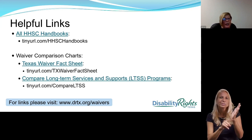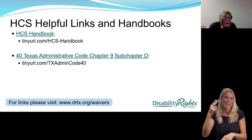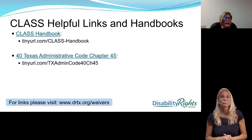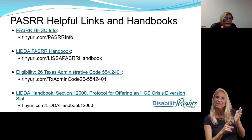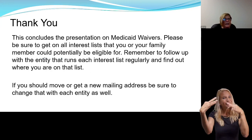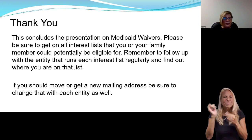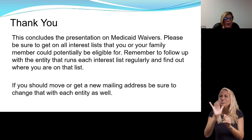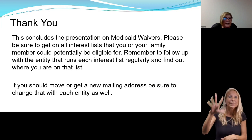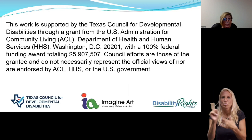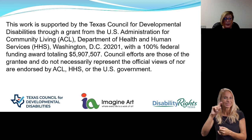Below are some helpful links from handbooks of HHSC to waiver comparison sheets, income and asset limits, the HCS handbook, and the Texas Administrative Code. There are handbooks and links on every one of the seven waivers, including the limited nursing facility stay. This concludes the presentation on Medicaid waivers. Please be sure to get on all interest lists that you or your family member could potentially be eligible for. Remember to follow up with the entity that runs each interest list regularly and find out where you are on that list. If you should move or get a new mailing address, be sure to change that with each entity as well. This work is supported by the Texas Council for Developmental Disabilities, Imagine Art, and Disability Rights Texas. Thank you.